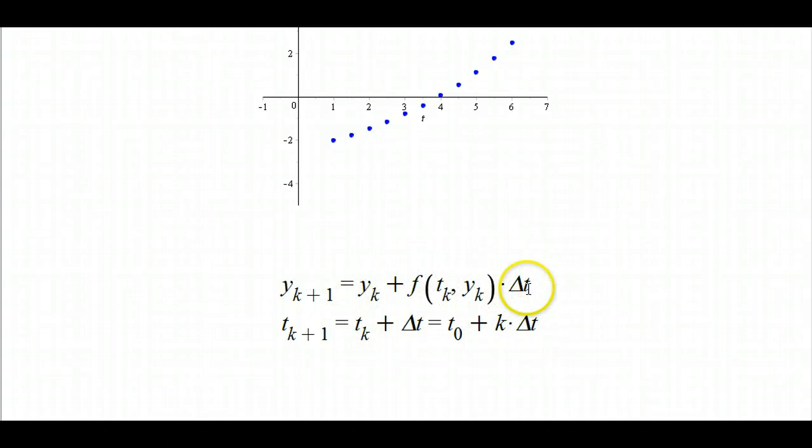This quantity on the right-hand side is exactly the formula for the tangent line at the point we're trying to find out.